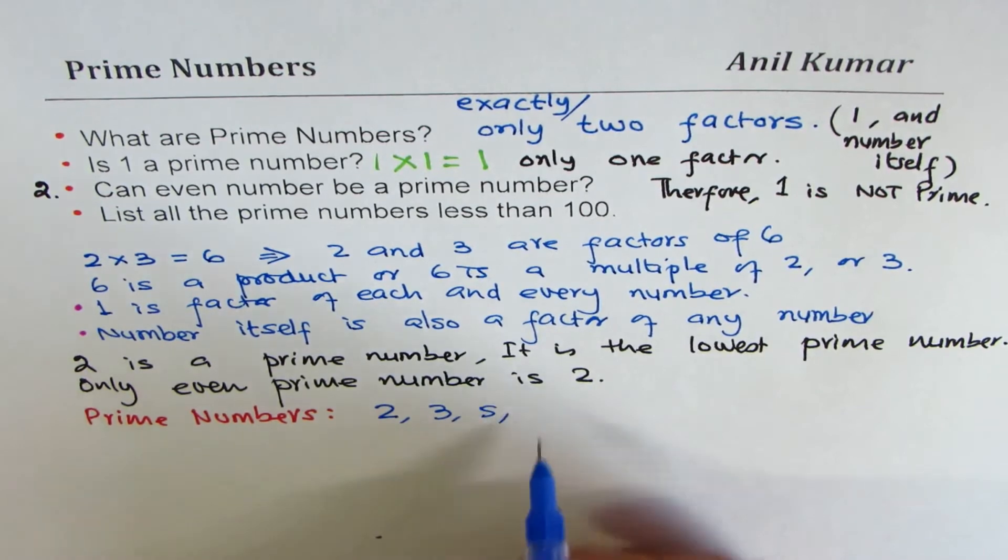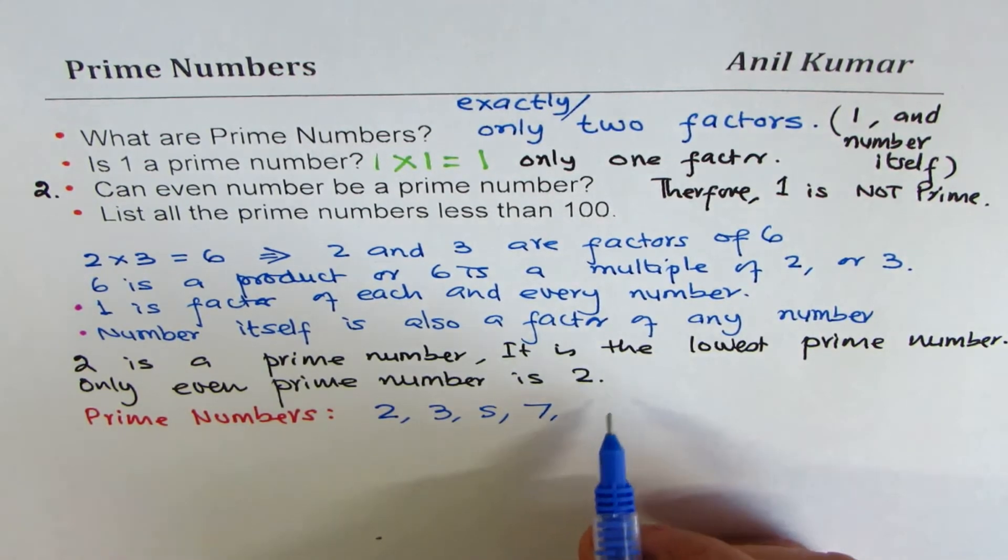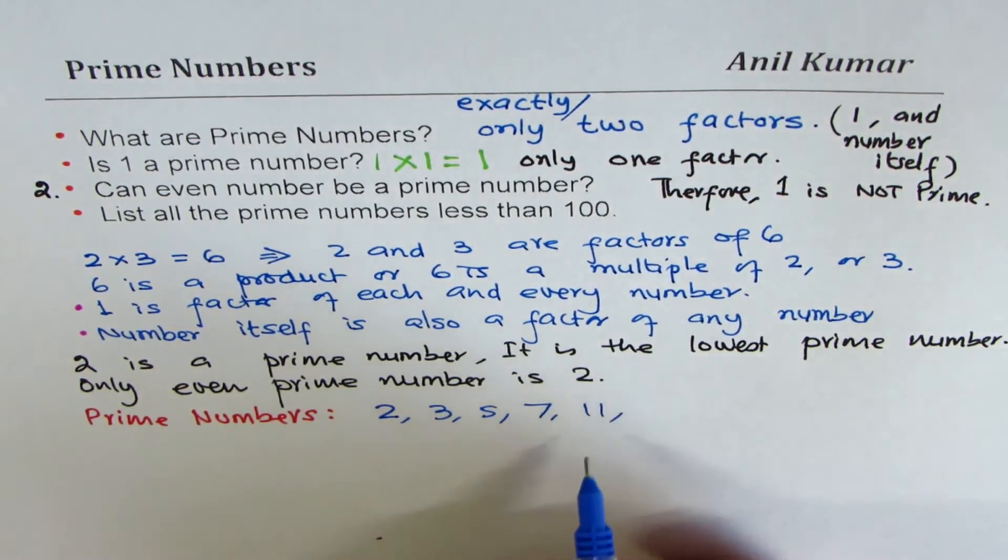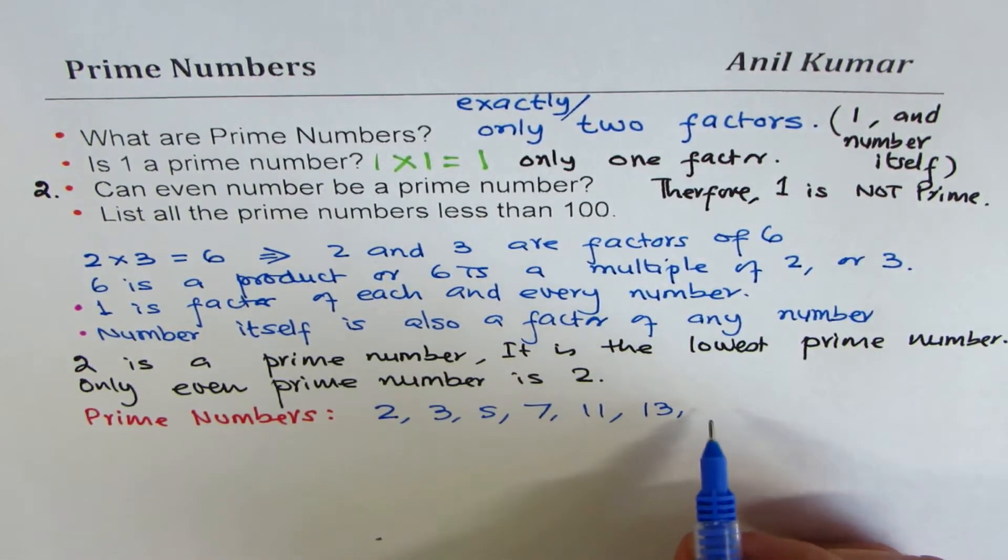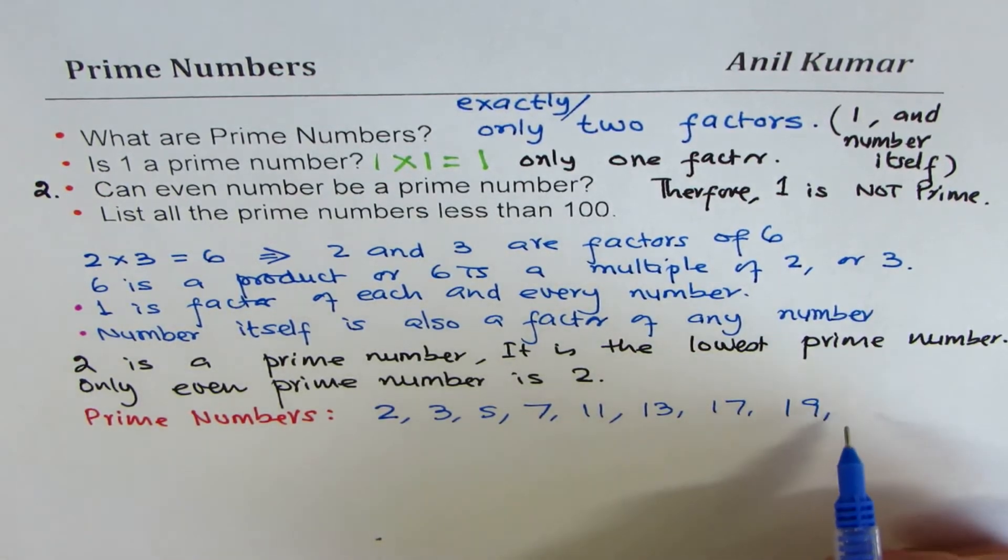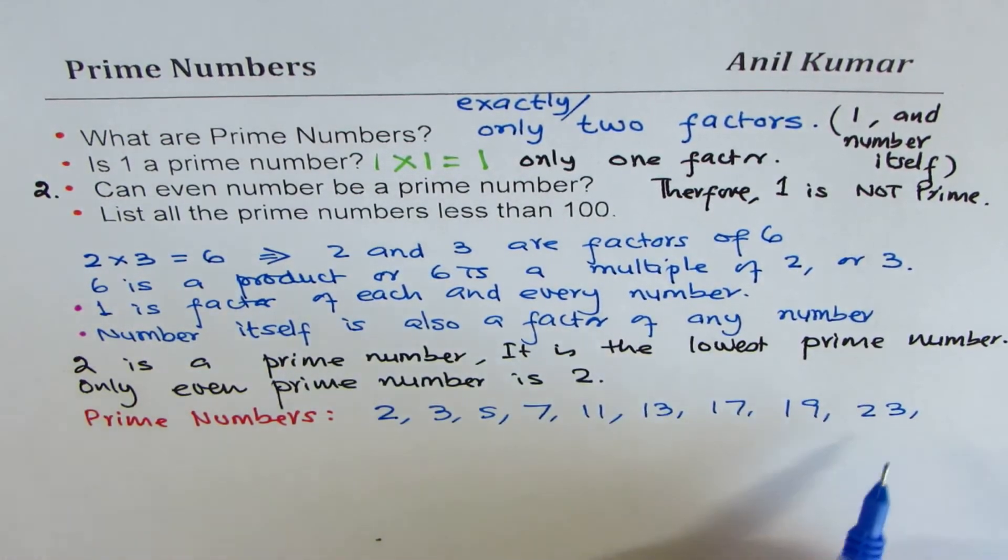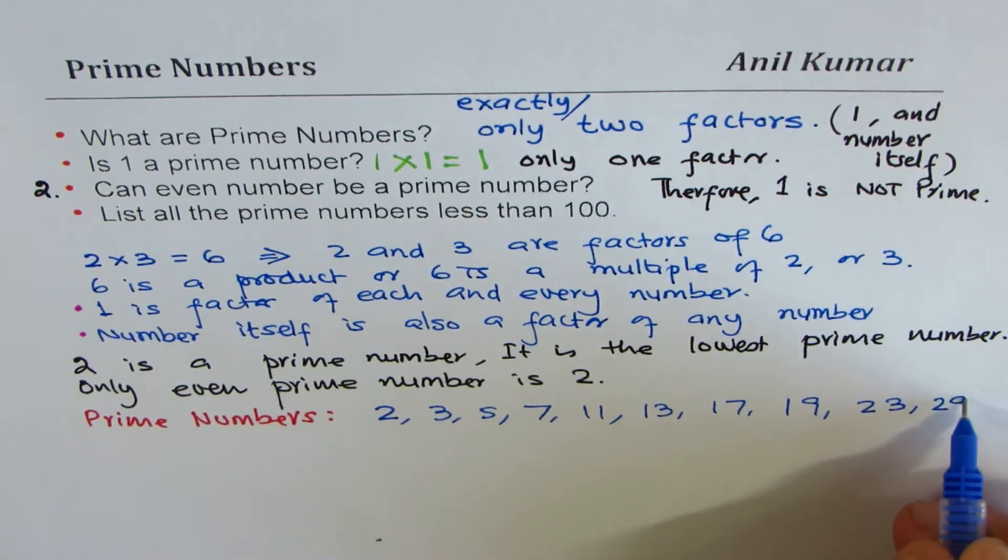Then we have three, five. Six is even, so disregard even numbers. Seven, nine has two multiples, but 11 is okay. Then we have 13, 15 has five, 16 is even, 17 is okay, 19 is okay. 21, two plus one is three, so we'll avoid that. So 23 is also a prime number. Then 24, 25 is divisible by 5, 26 is even, 27 nine times 3, 28 is even, 29 could be the next one.